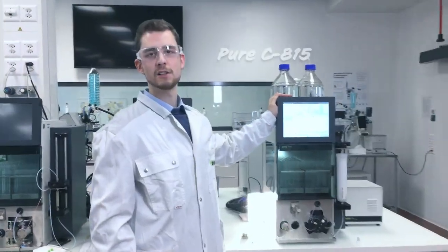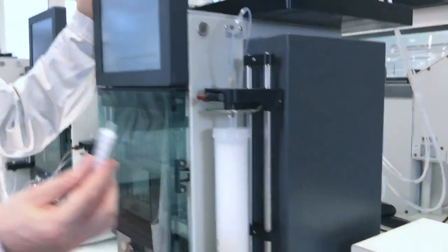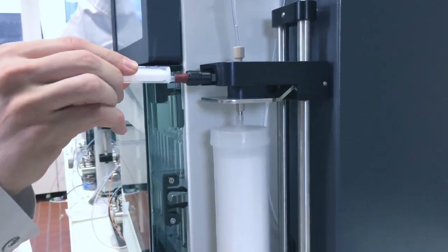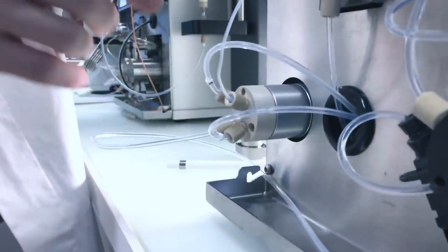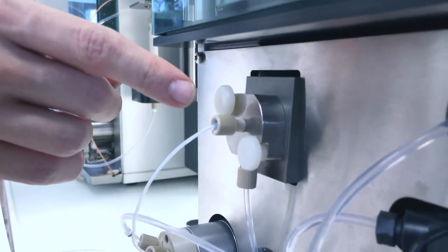So let's see how does that work on our pure system. Your sample is injected here, going through the column, coming out of the column to the splitting valve, and from here into a nebulizer, which sprays very tiny droplets.